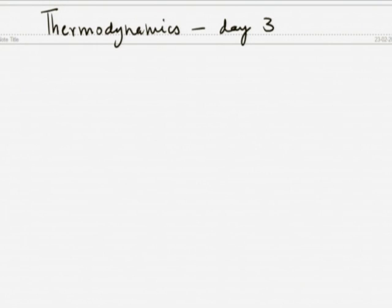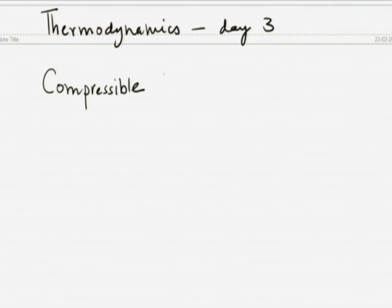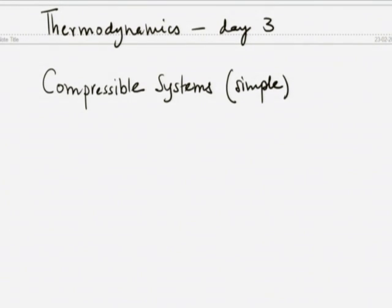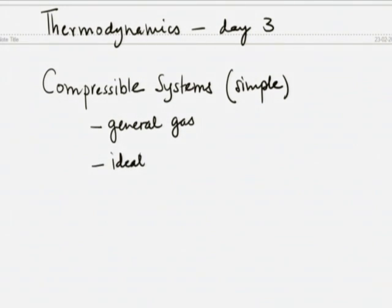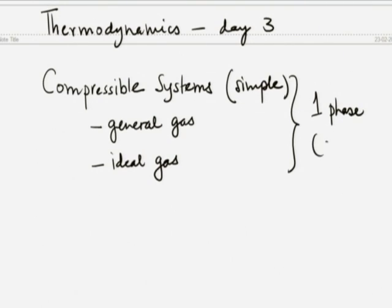Yesterday when we concluded, we had a reasonable grasp of compressible systems — simple control volumes. And in all this, we considered a model of a fluid in a single phase, typically the gaseous phase. We had a model of an ideal gas for a general gas.